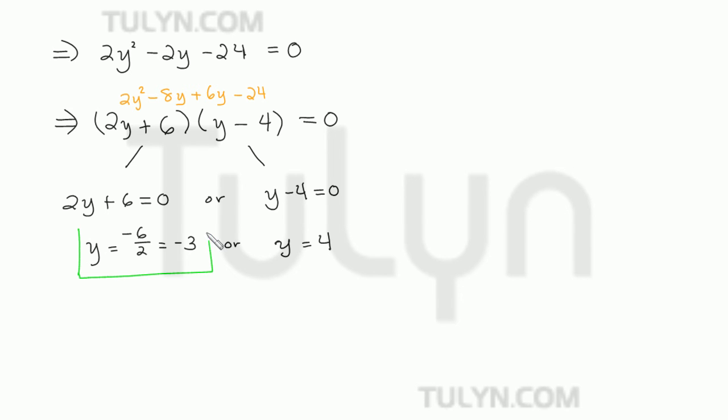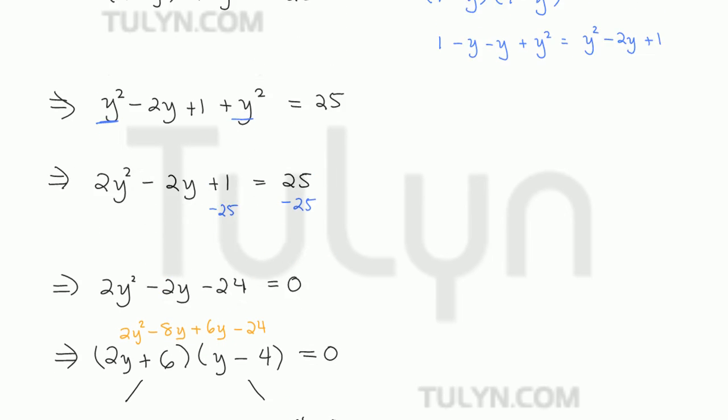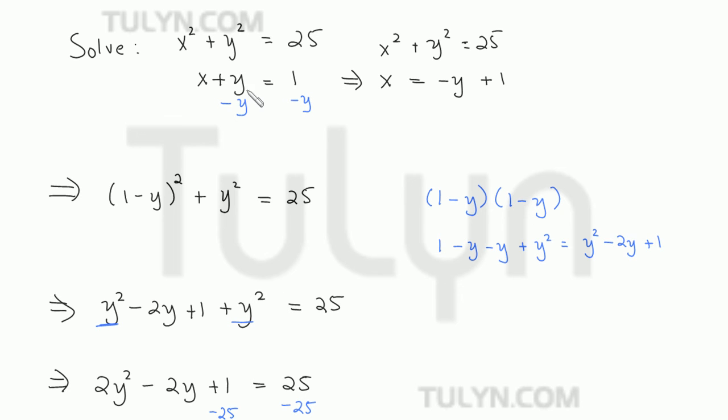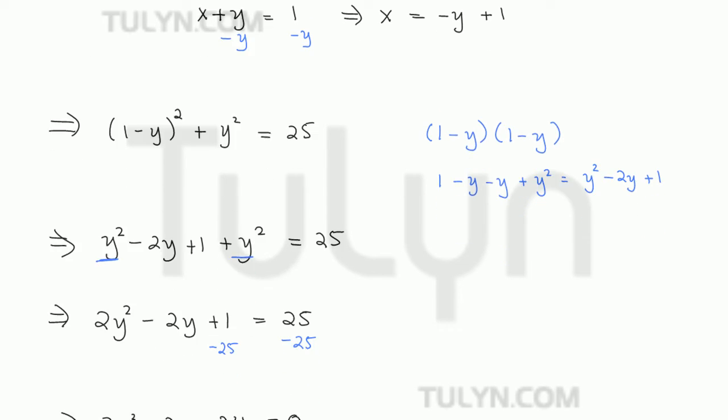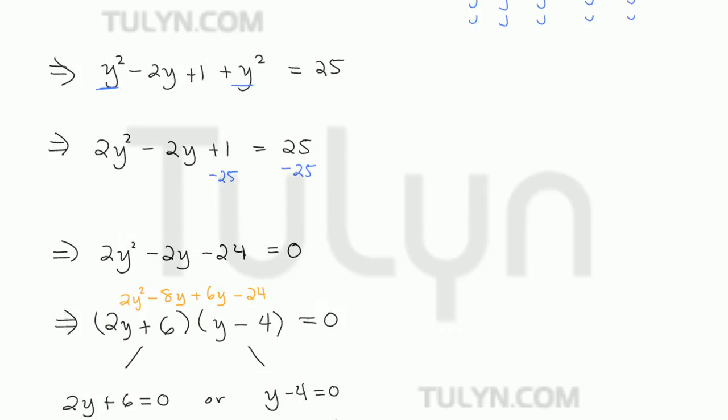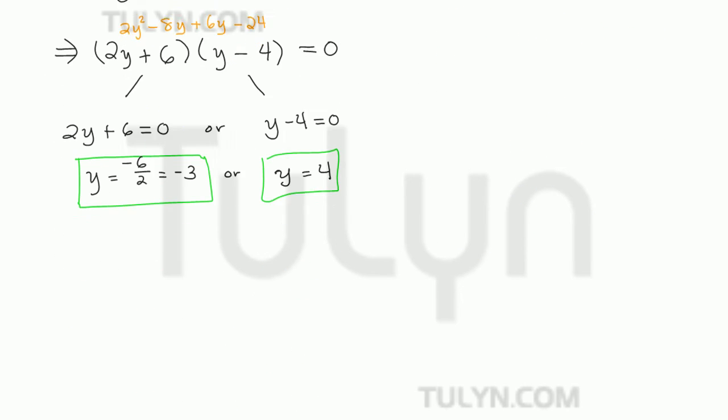So now we have these two values for y. But this system is in two variables, we have x and y. So now what we want to do is plug in the values that we found for y into one of the two equations to solve for x. And since the second equation is much easier to plug things into than the first, let's do that. So we have x plus y is equal to 1. So we want to plug y is equal to negative 3 and y is equal to 4 into that second equation, x plus y is equal to 1.